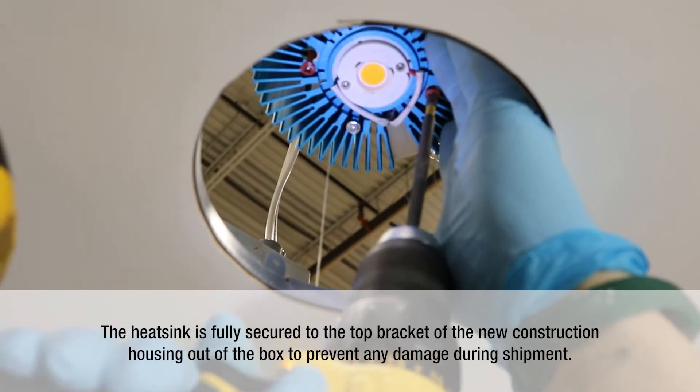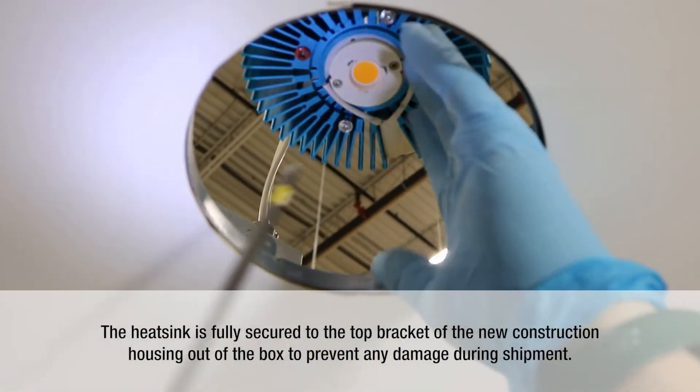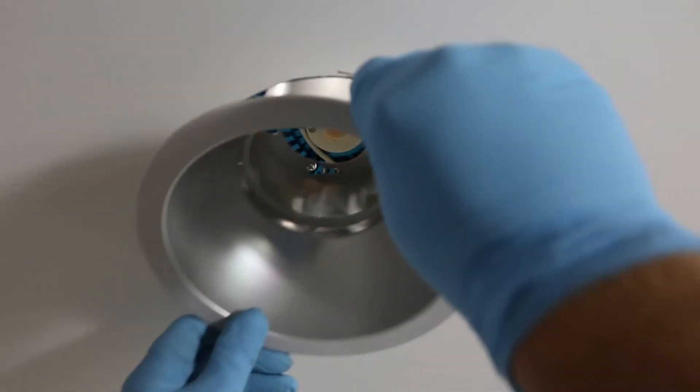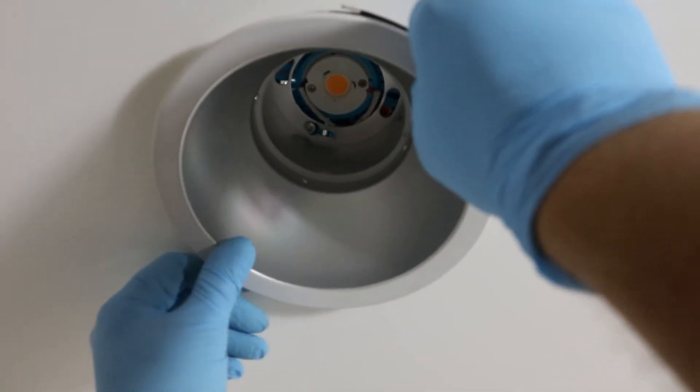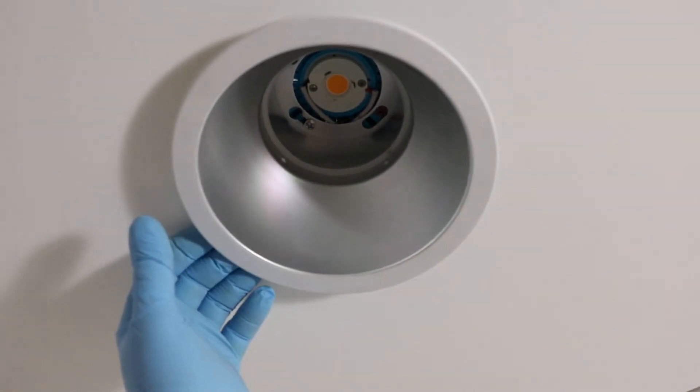The heatsink is fully secured to the top bracket of the new construction housing out of box to prevent any damage during shipment. Align the lower reflector with the keyhole slots. Insert the lower reflector and twist to lock with silver screws.